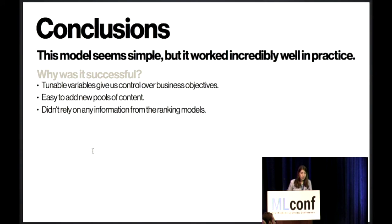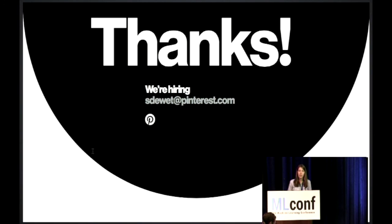So in conclusion, this model was not an incredibly complicated version of a multi-armed bandit, but it worked really well for us. And why was it successful? It was successful because it consisted almost entirely of tunable variables that were based on our business objectives. We made it really easy to add new types of content, and we completely isolated what was going on in the content blending from what was going on in the ranking. And so those two teams could work independently, and they never felt like one of those teams was slowing the other one down or causing problems for the other team. And that is all I have to say. Thank you all very much for your time.